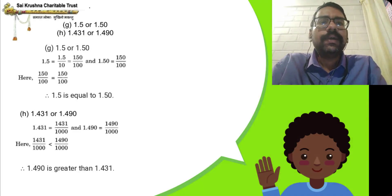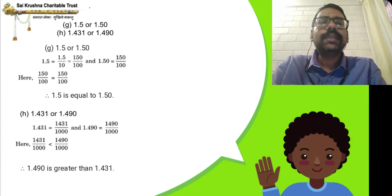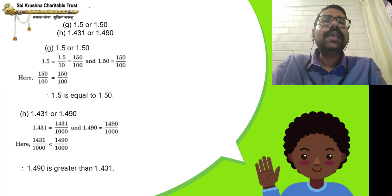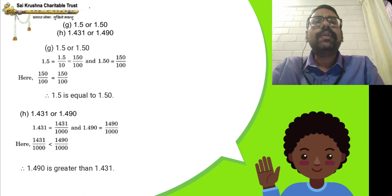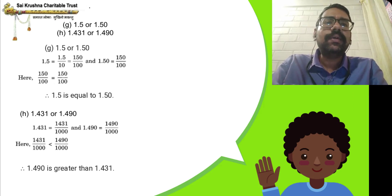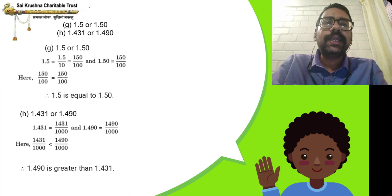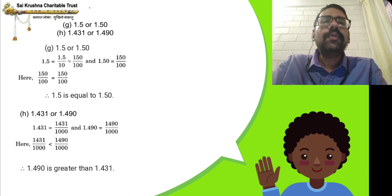Which is greater, 1.5 or 1.50? Comparing the whole number part: both have 1. Tenths part: both have 5. Hundredths part: 1.5 written as 1.50 also has 0 in both. Therefore 1.5 and 1.50 are equal.